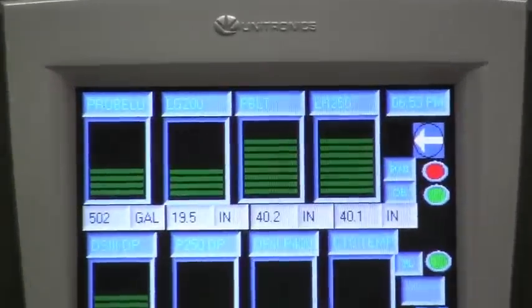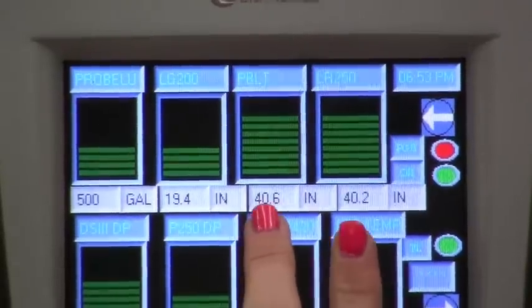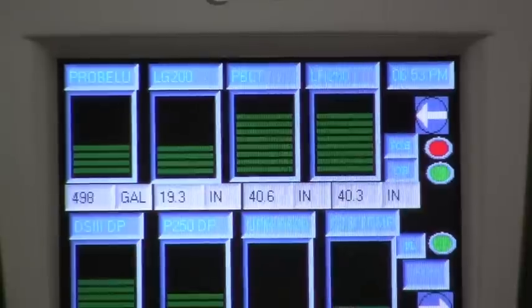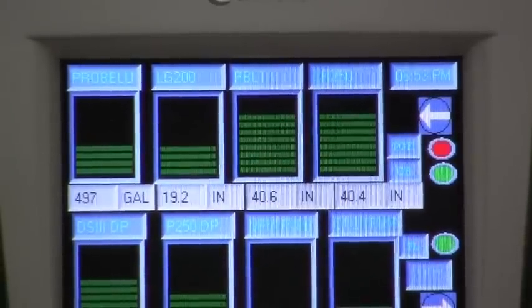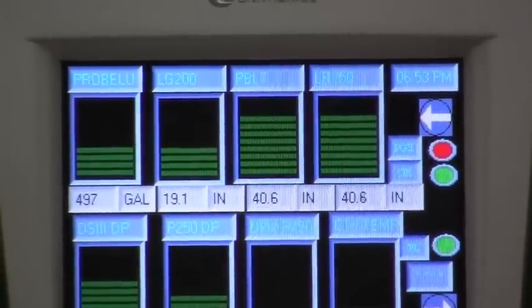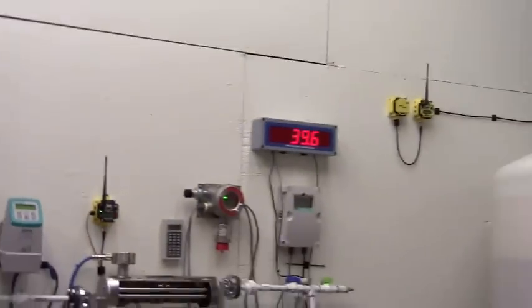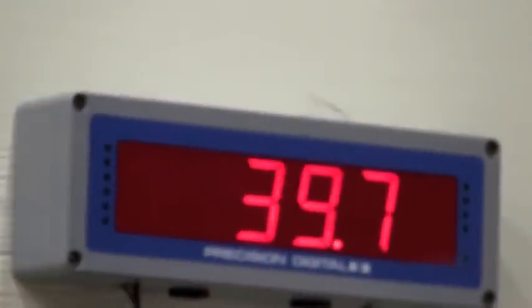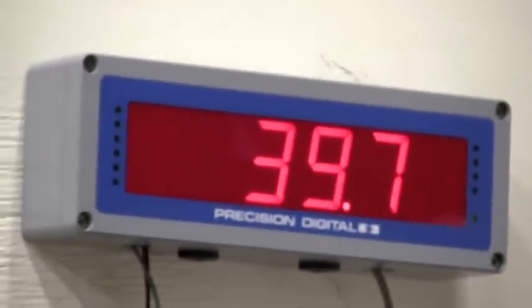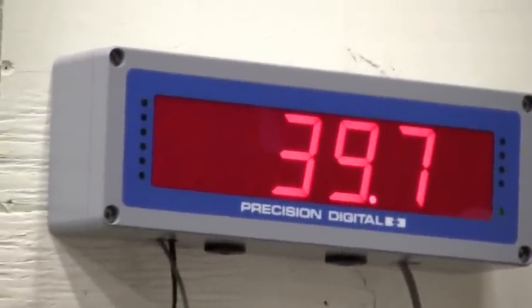Now we're looking at the top 2 right side measurements. Those are our two level transmitters that are in the same tank. You can see they're reading within a couple tenths of an inch of each other. We also have a third level measurement in that tank. If we go over to the Siemens Hydra Ranger 200, you'll see it's reading about the same as well.